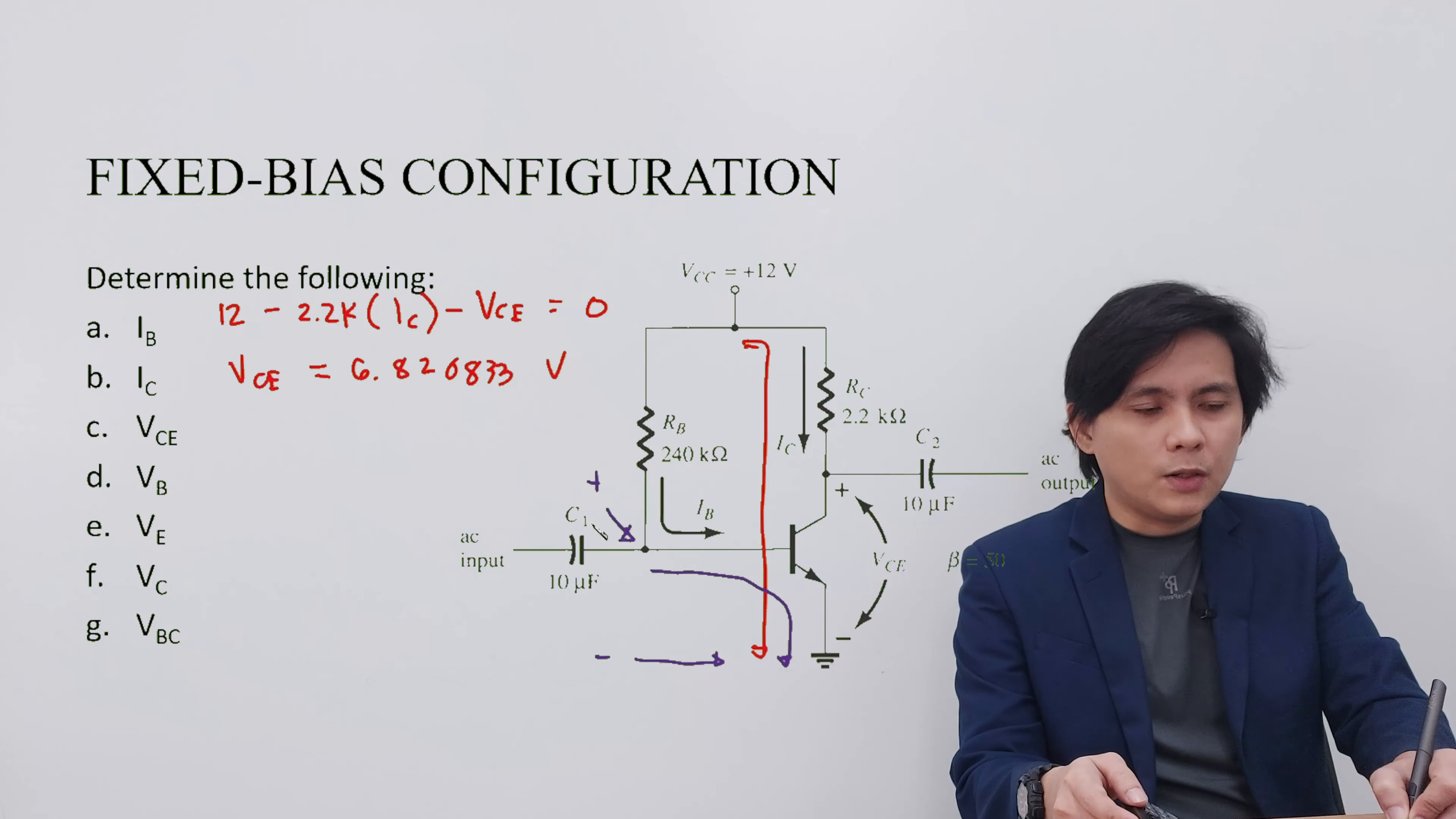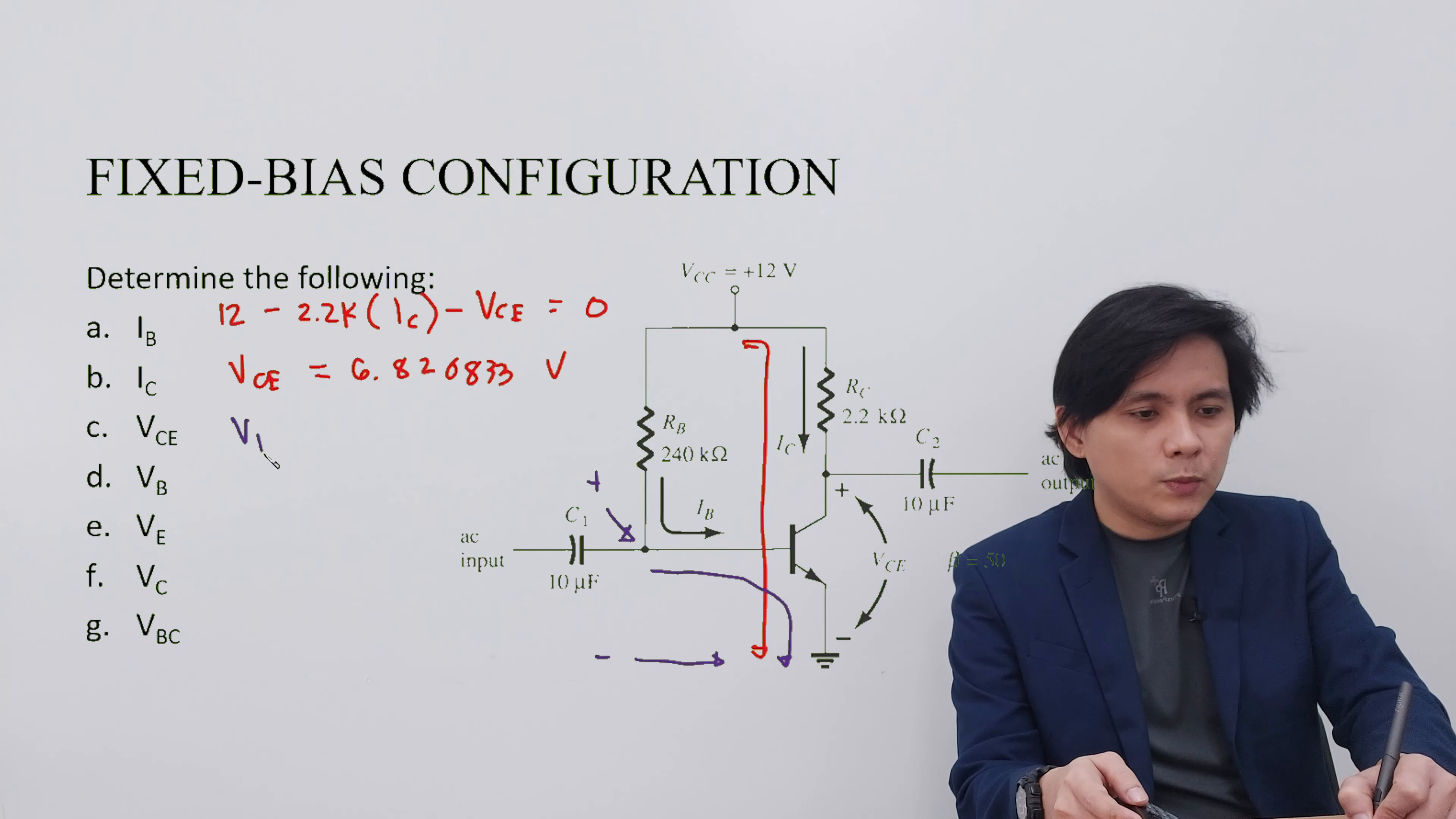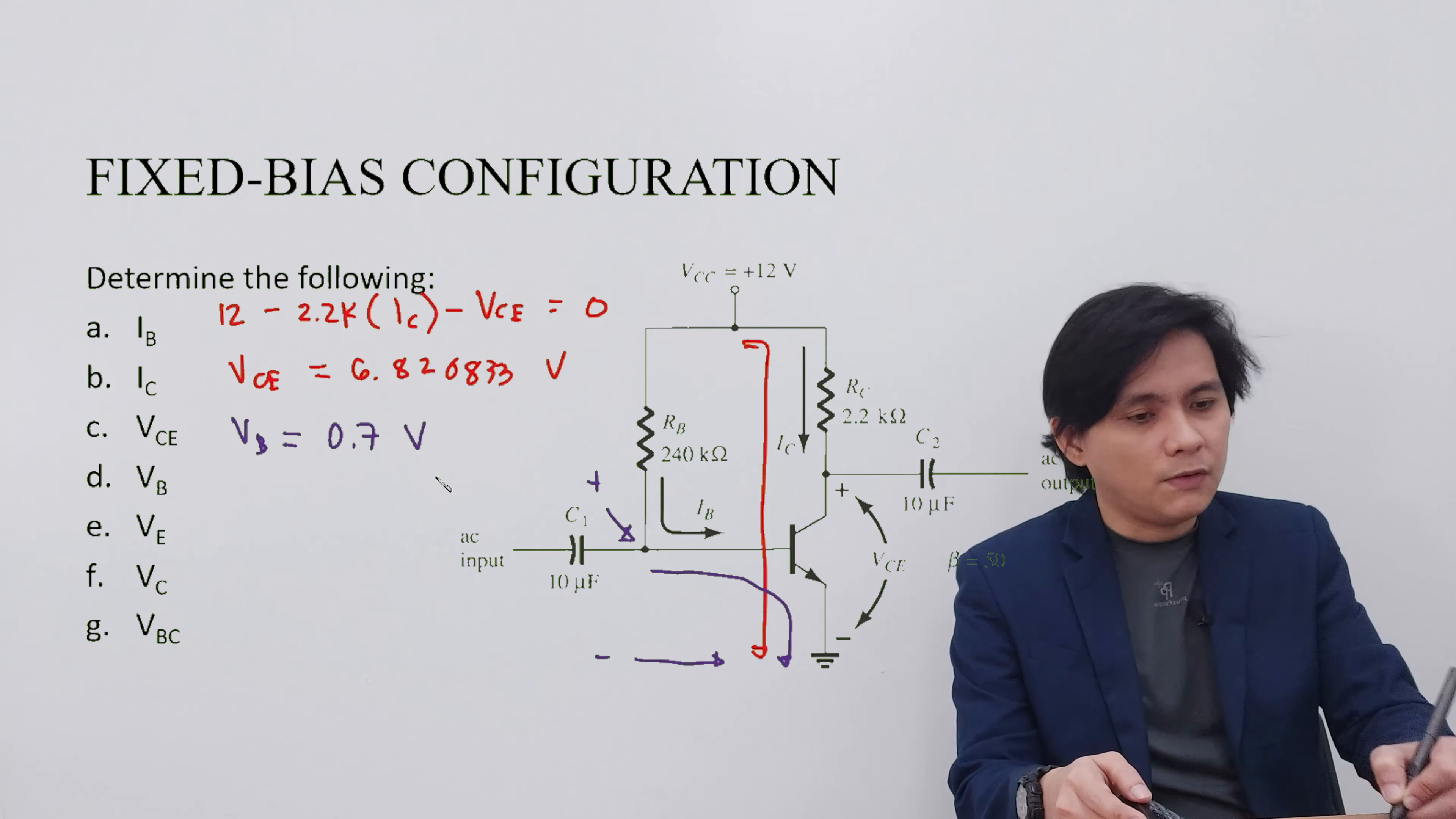When we measure it through a voltmeter, the value that we can measure is just the BE junction voltage drop. So that's equivalent to 0.7 volts.